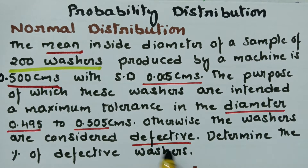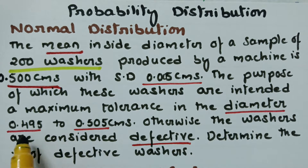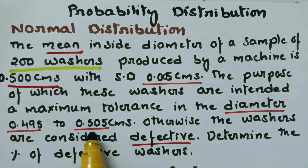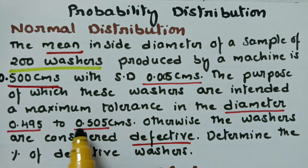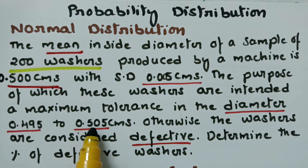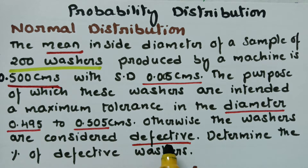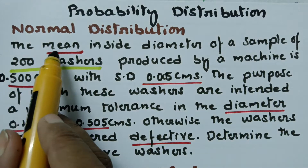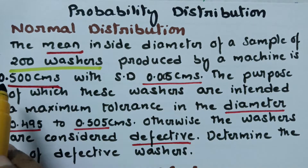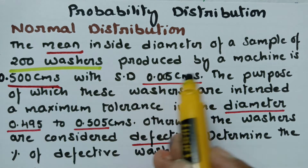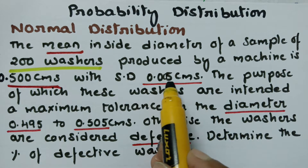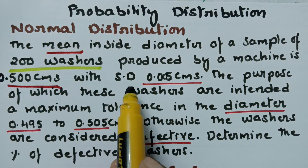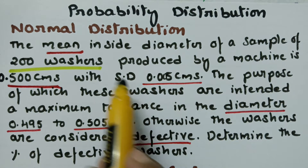The maximum tolerance in the diameter is between 0.495 to 0.505. So if it maintains this diameter then they are non-defective washers, otherwise the washers are defective. Now we have to determine the percentage of defective washers. There are 200 washers. The mean is given as 0.500 centimeters and standard deviation is given as 0.005. Since mean and standard deviation are given, we have to go with the normal distribution.